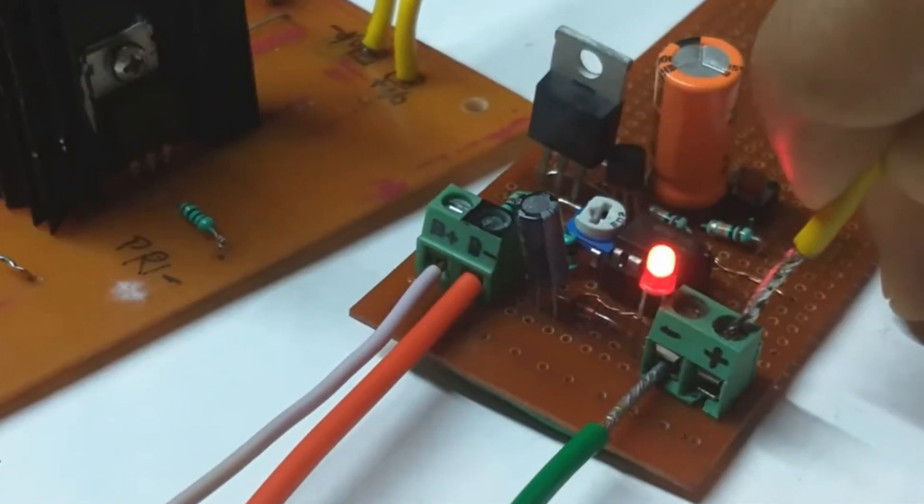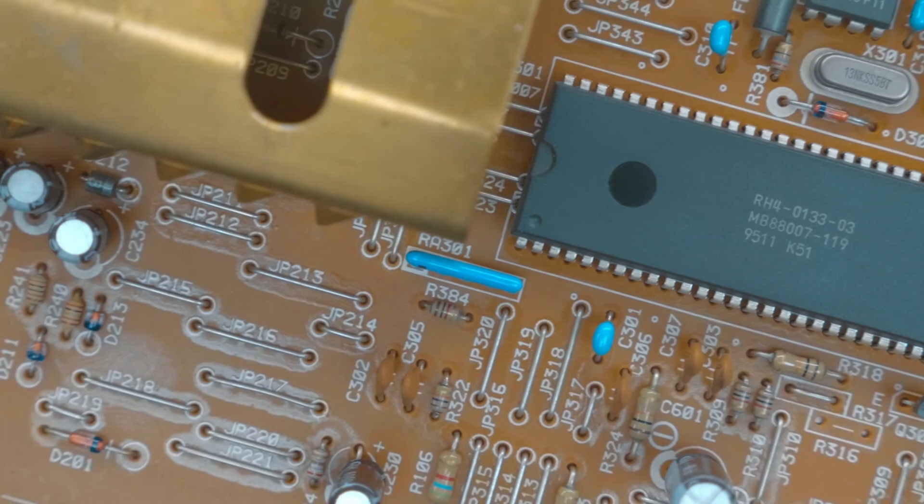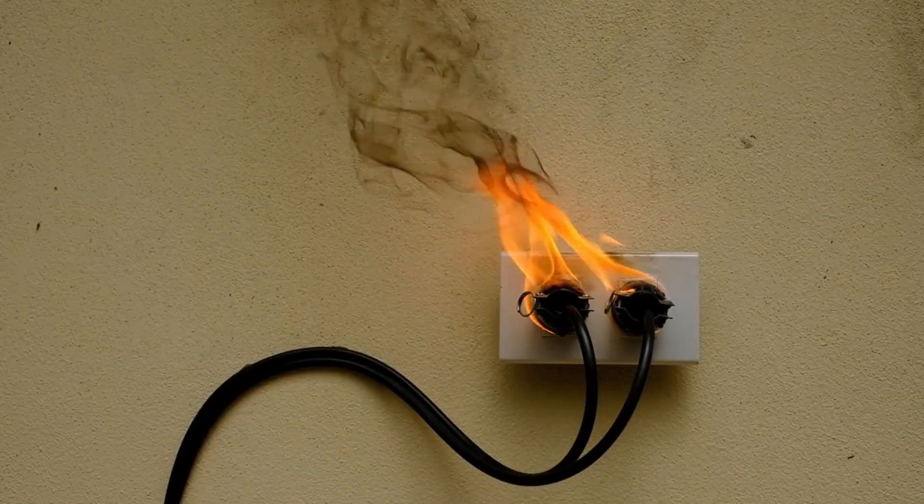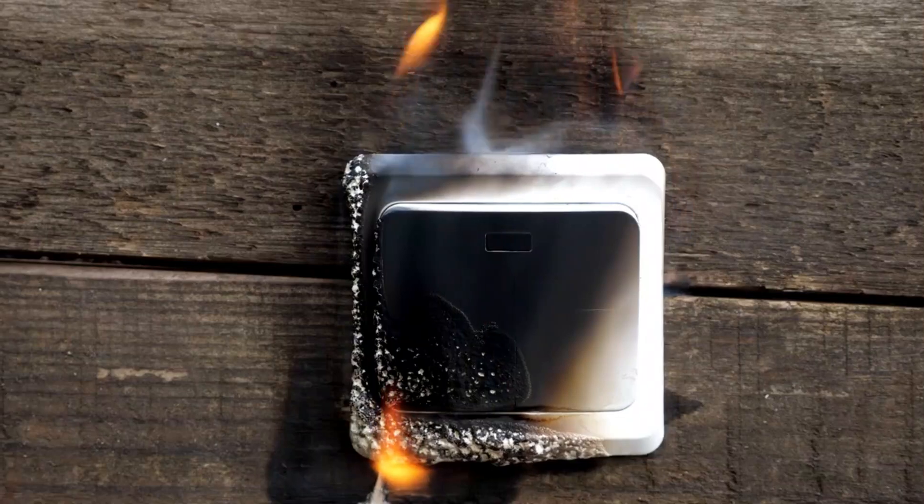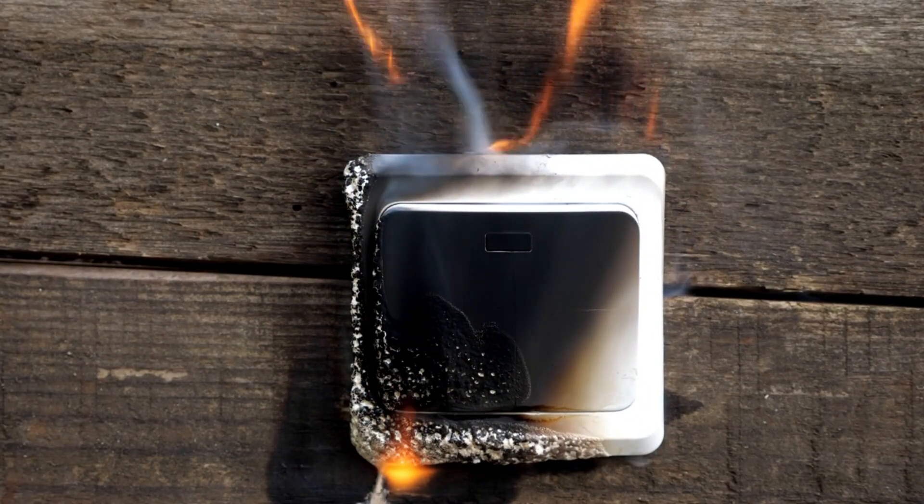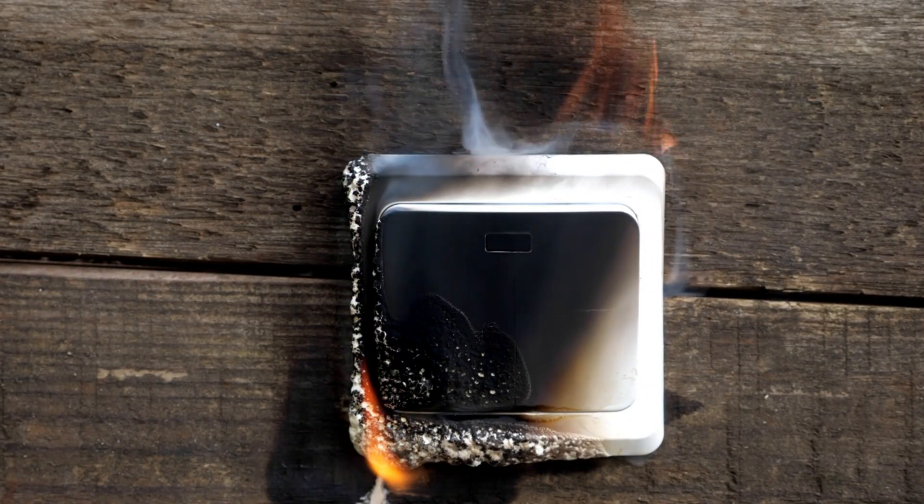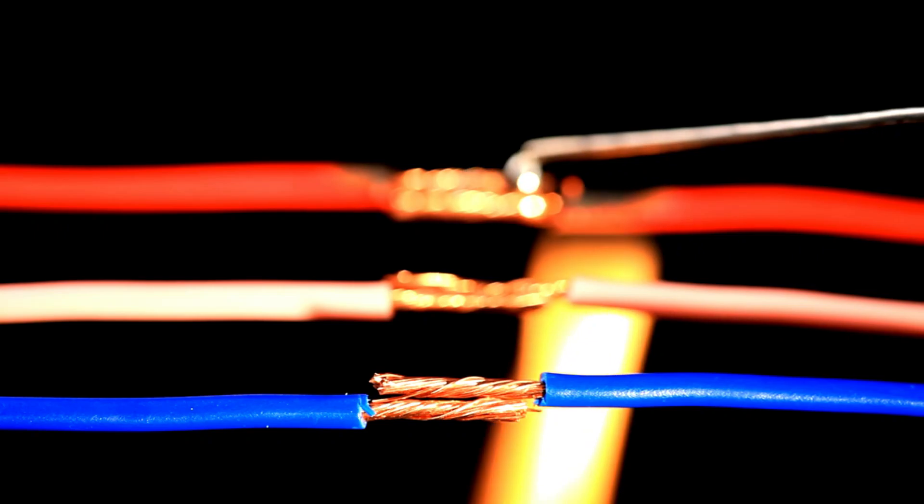If the current exceeds the fuse's rated capacity due to a fault in the circuit, a short circuit or component failure, the fuse element heats up. Once the temperature of the fuse element reaches a certain point, the material melts or vaporizes, breaking the electrical connection.